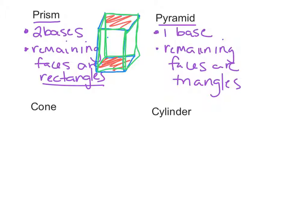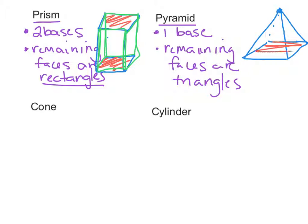For a pyramid, it looks kind of like this. You can see that the base in this picture is a square. And the remaining faces are triangles — there are triangles on the outside here. On this one, there are four remaining faces.